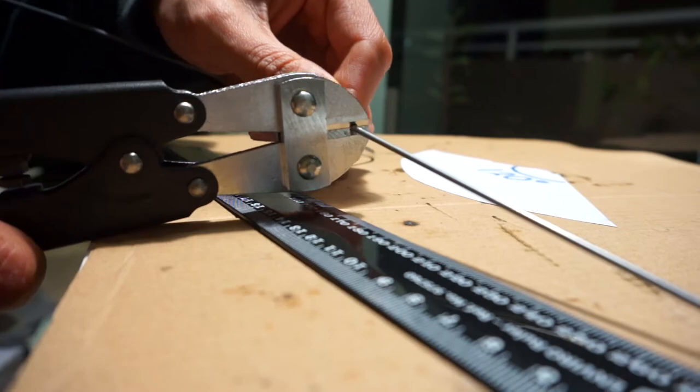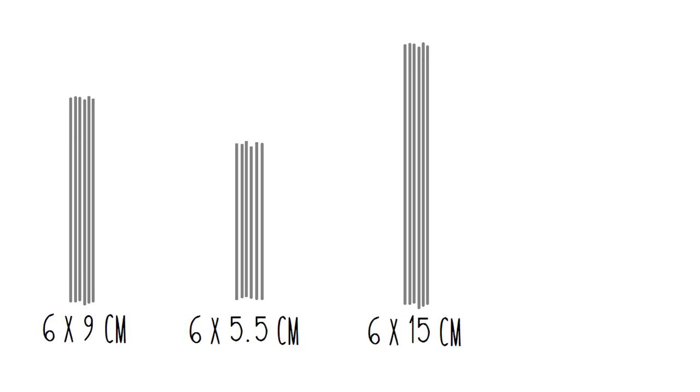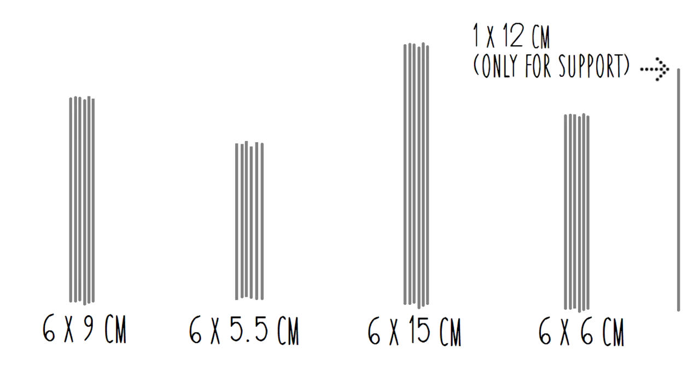So I first took the coat hangers and cut, cut, cut. So I had 6 lots of 9cm, 5.5cm, 15cm and 6cm pieces. I also cut one 12cm piece that will only be used for support.